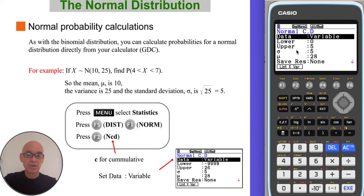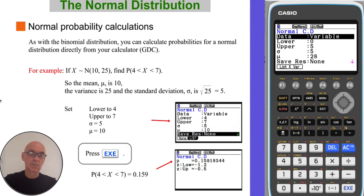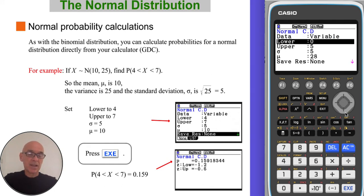Make sure the data is set to variable. We then scroll down and enter the lower limit of the calculation, which is x has to be bigger than 4. We can set the upper limit of the calculation, which has to be less than 7.